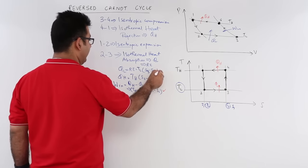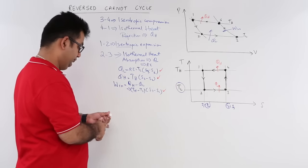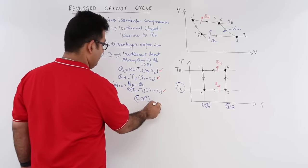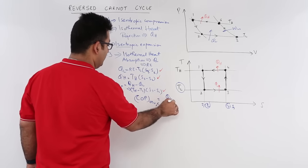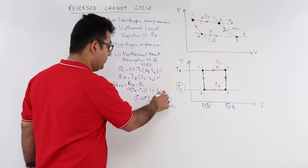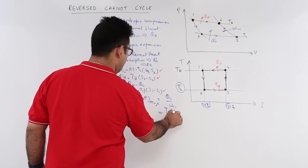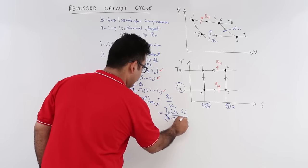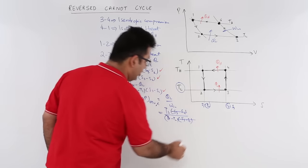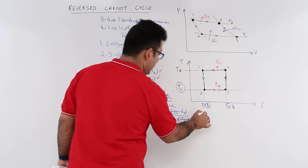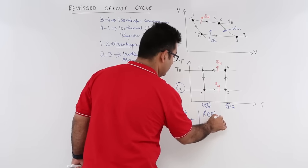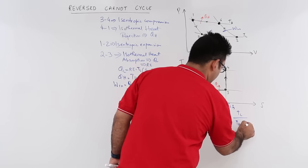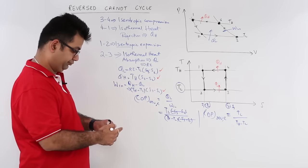Now we have the value of QH, the value of W, and the value of heat absorbed. The COP of reversed Carnot cycle is equal to the heat absorbed upon work input. This becomes QL = TL(S3 - S2) divided by (TH - TL)(S3 - S2). Strike off these entropy changes, so the COP of the reversed Carnot cycle becomes TL divided by (TH - TL).